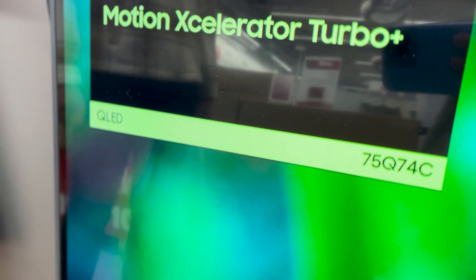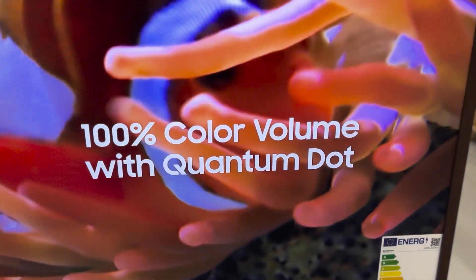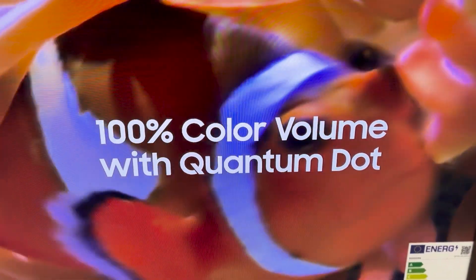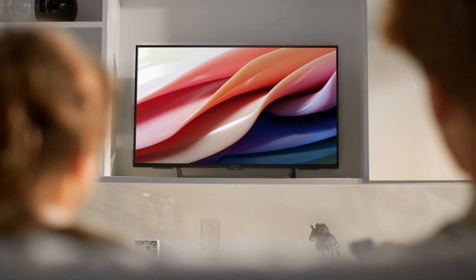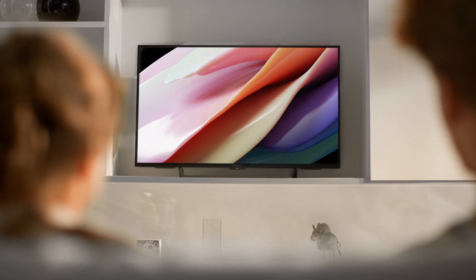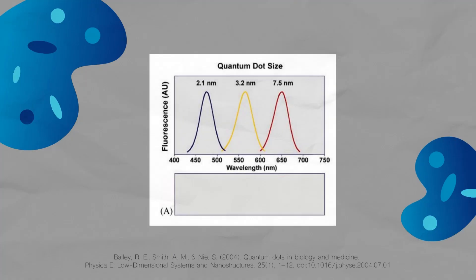Ever looked at the rich hue on a QLED TV? That's quantum dots in action, manipulating light with size-driven color emission, making our entertainment visually electrifying. As we previously discussed, in quantum dots, the size of the dot dictates these energy levels. Smaller quantum dots have electrons with higher energy levels. When excited, they emit light towards the blue end of the spectrum. Conversely, larger quantum dots have electrons at lower energy levels. This results in light emission towards the red end when excited.